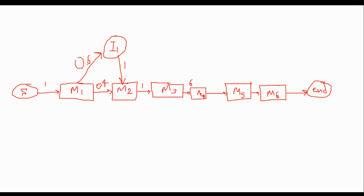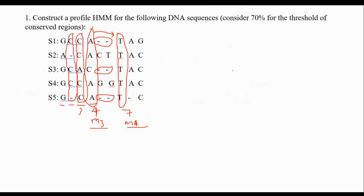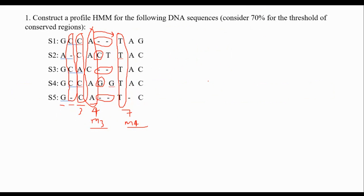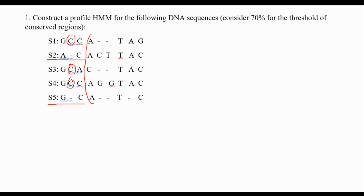So 60% of cases go directly from M3 to M4. The remaining 40% are a different story — those have inserted letters, so I define a new inserted state I2. Therefore, 40% of cases go to I2. Now I check whether I2 has a self-loop or goes directly to M4.